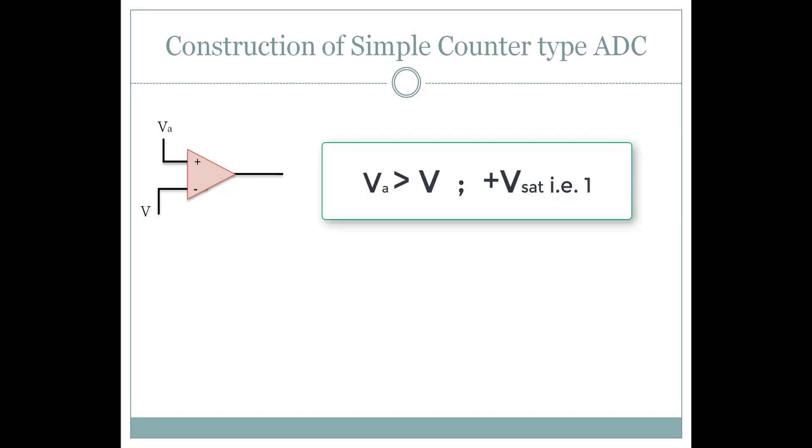In a comparator, if analog voltage is greater than the reference then the output is a logical one, and if analog voltage is less than or equal to the reference voltage, output is a logical zero.